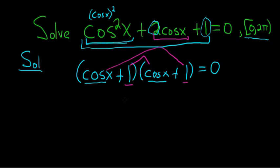So this is the same as saying cosine x plus 1 is equal to 0. You set them both equal to 0 but they're the same, so you just end up with this. Then you solve for cosine x, so cosine x is equal to negative 1.